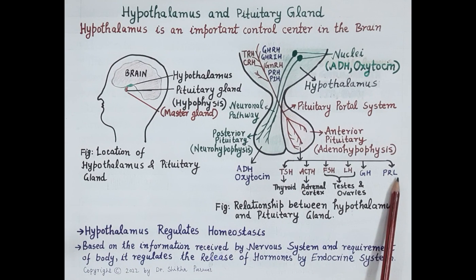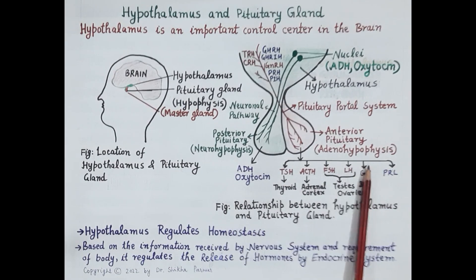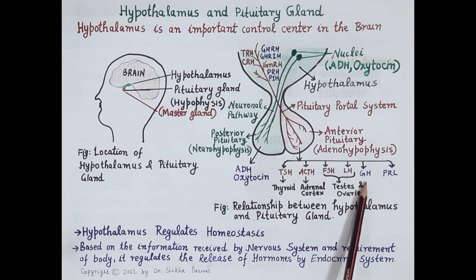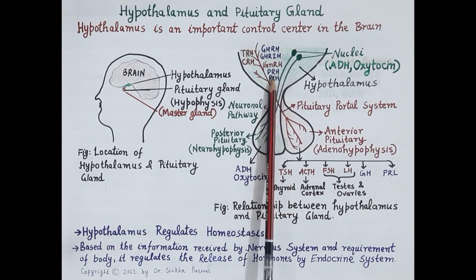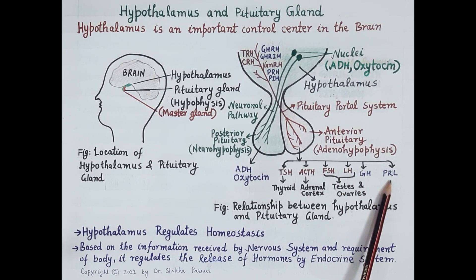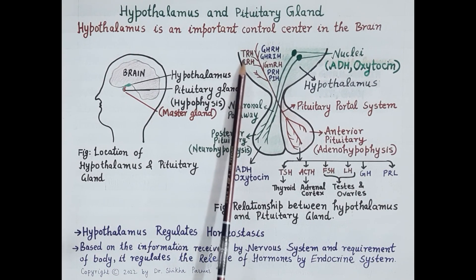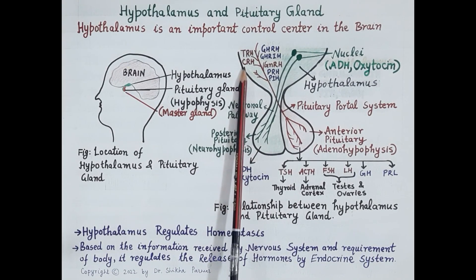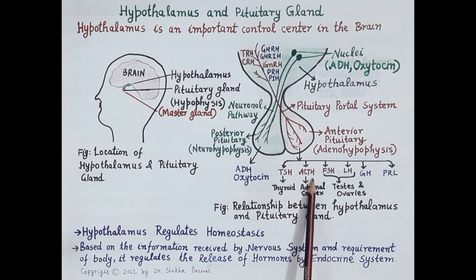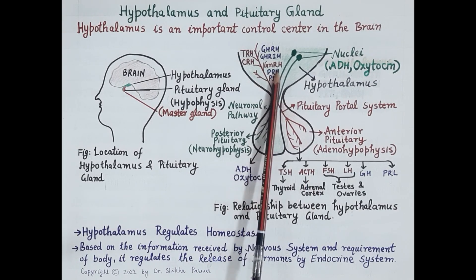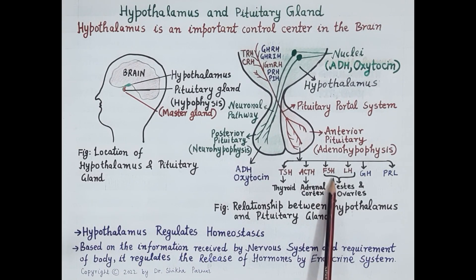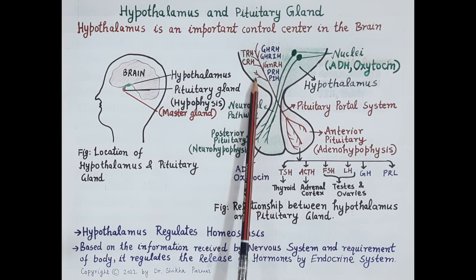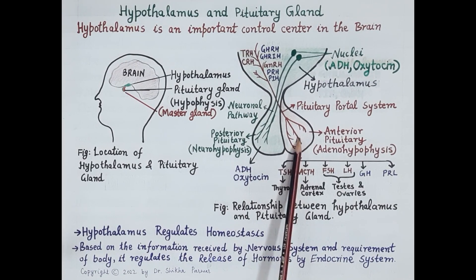These are the hormones released by the anterior pituitary. Growth hormone releasing hormone stimulates release of growth hormone by the anterior pituitary. PRH stimulates release of prolactin by the anterior pituitary. TRH stimulates release of adrenocorticotrophic hormone by the anterior pituitary. Gonadotropin releasing hormone stimulates release of follicle stimulating hormone and luteinizing hormone by the anterior pituitary. This is how hypothalamus regulates the functioning of anterior pituitary.